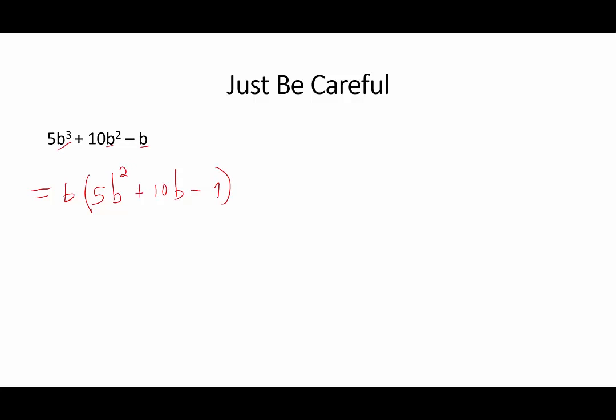If we want to check our process, which we should especially at the beginning, we multiply b times each term. This gives us 5b cubed plus 10b squared minus b.